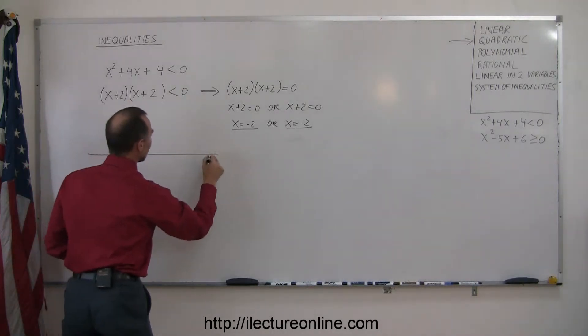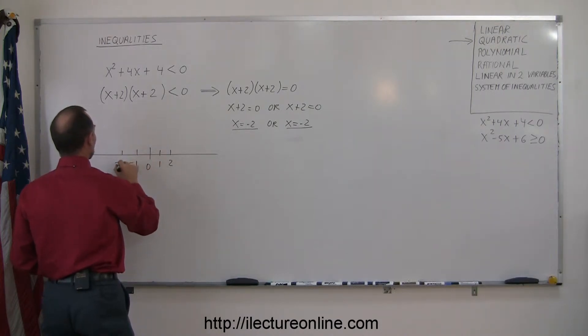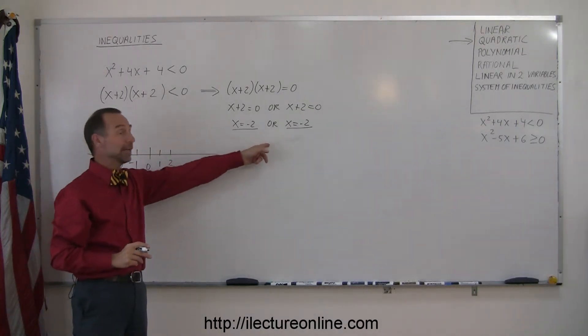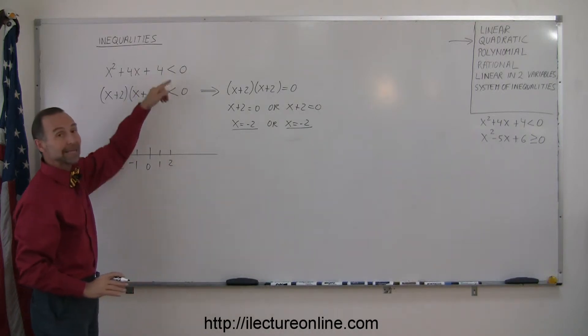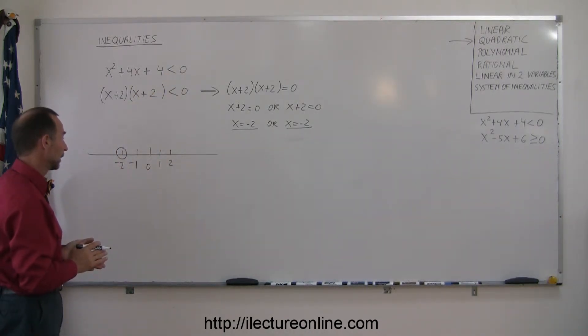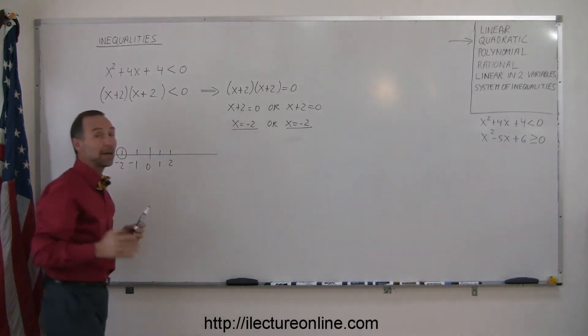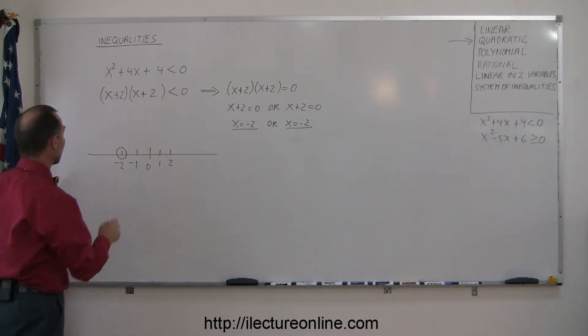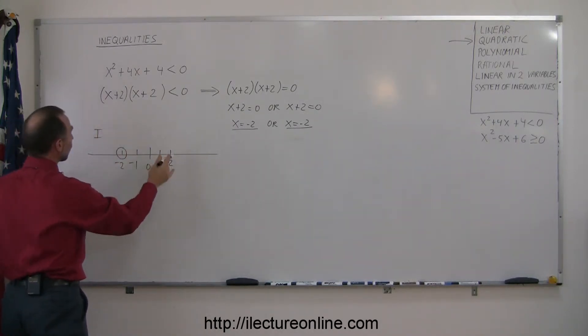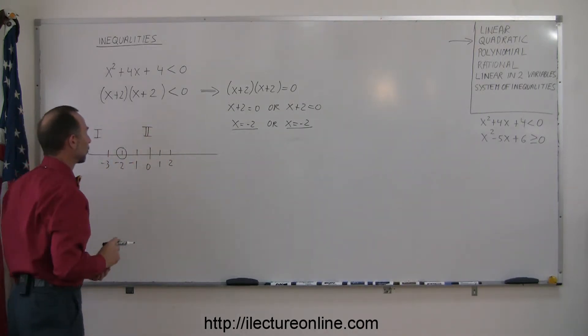Putting that on the number line, here's the number 0, let's say that's 1, that's 2, negative 1, negative 2, and notice that the only critical point is x equal negative 2. We draw a circle around it, a hollow circle, because there's no equal sign, meaning the number negative 2 is not part of the solution. Because these are both the same, that now means that there's only two regions instead of the normal three regions with a quadratic inequality. So to the left of negative 2 we have region 1, to the right of negative 2 we have region 2.